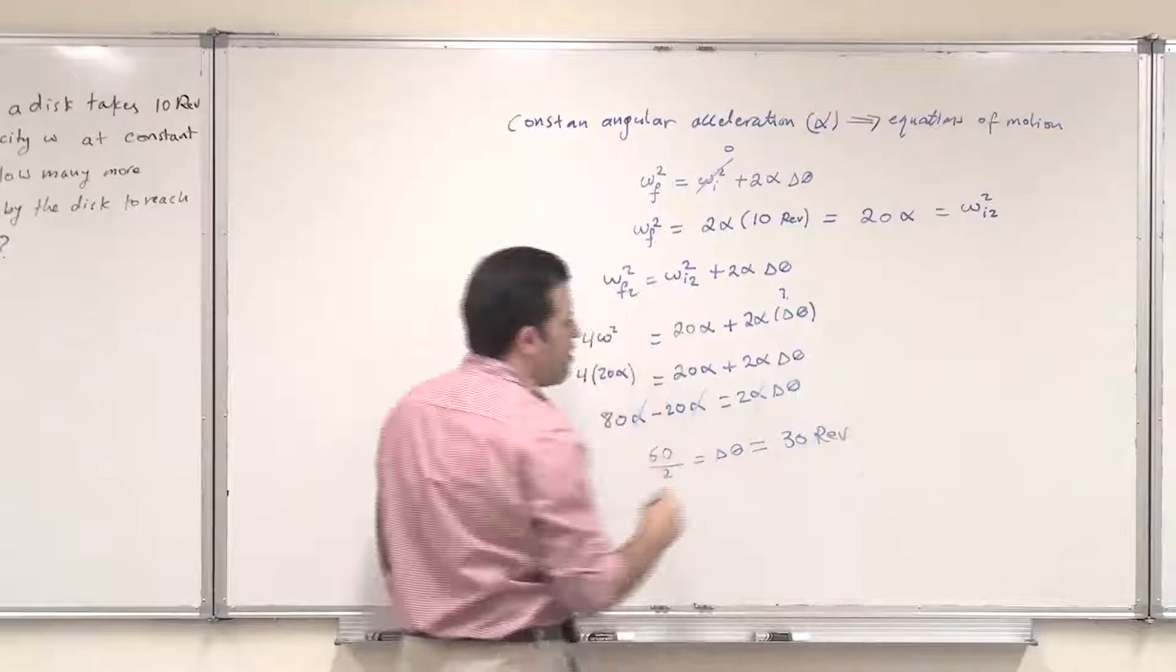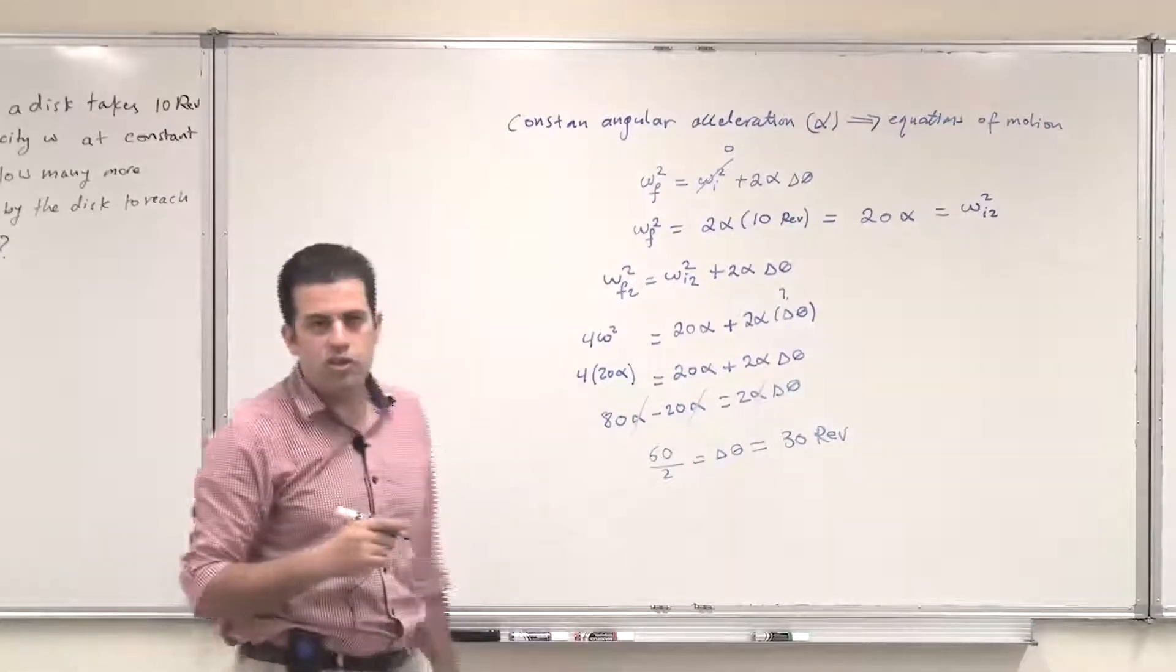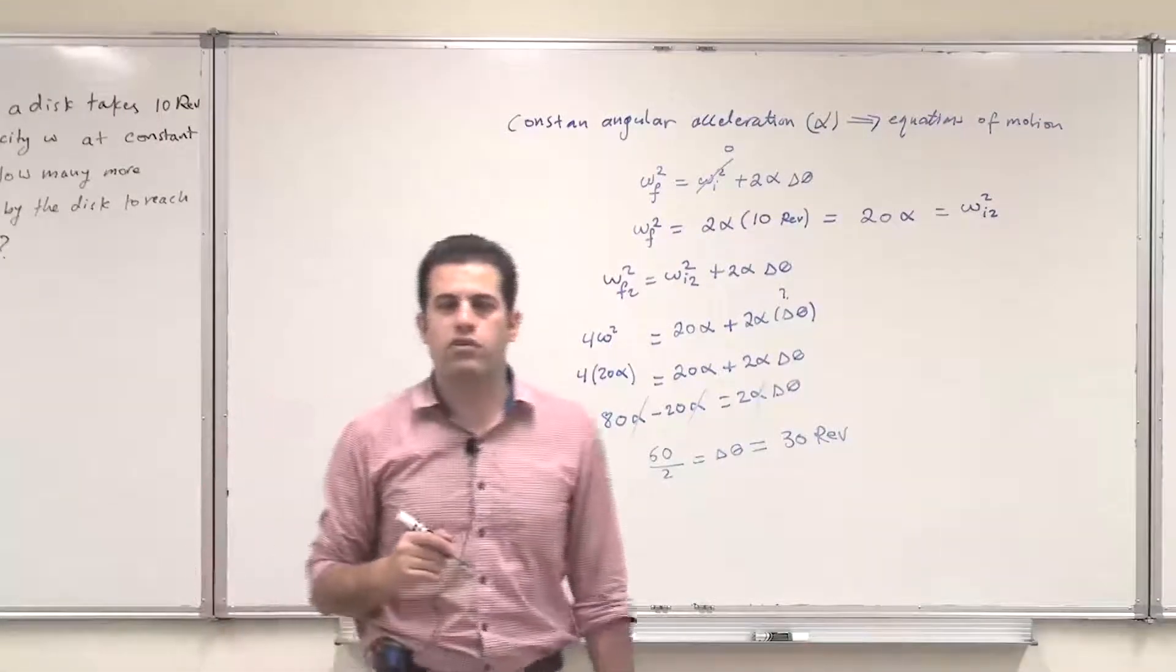So 30 revolutions more after the 10 revolutions, we reach a 2 omega angular velocity. Thank you.